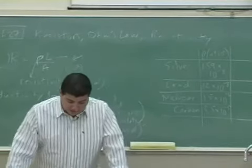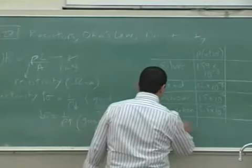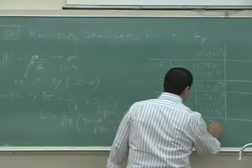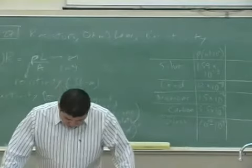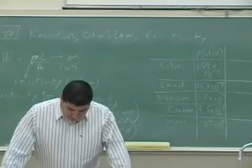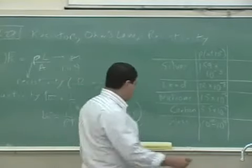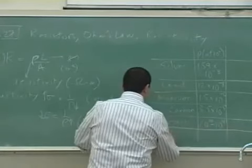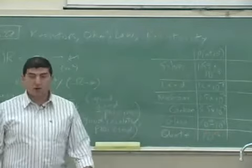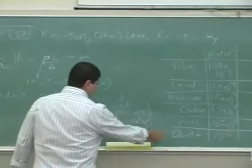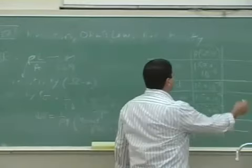Then you get to glass, 10 to the 10th to 10 to the 14th. Rubber, 10 to the 15th. Sulfur, 10 to the 15th. Fused quartz, 10 to the 16th. So the largest one there out of the list is 10 to the 16th quartz. Something of the order of 10 to the 16th. So out of this list, this would be the highest rho, the biggest rho.